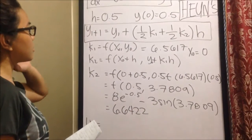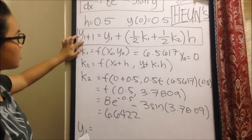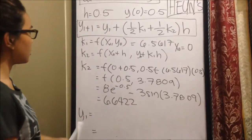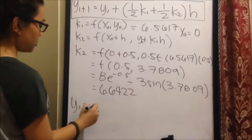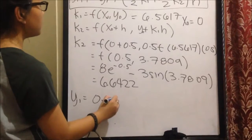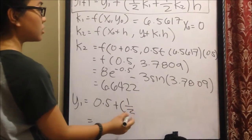So, in finding the YI plus 1 using the Heun's method, we have this formula, which is 0.5 plus 1 half of K1.